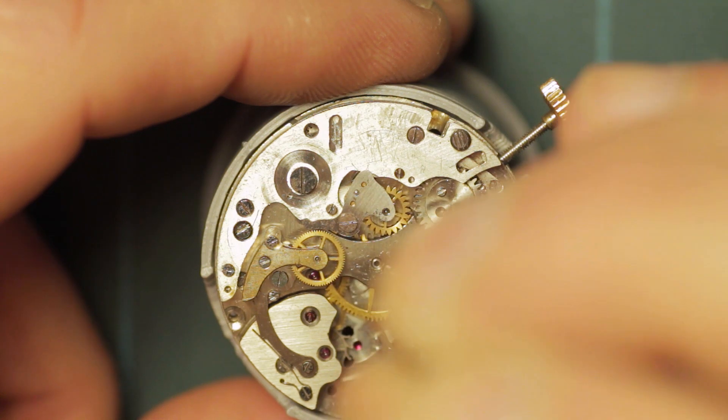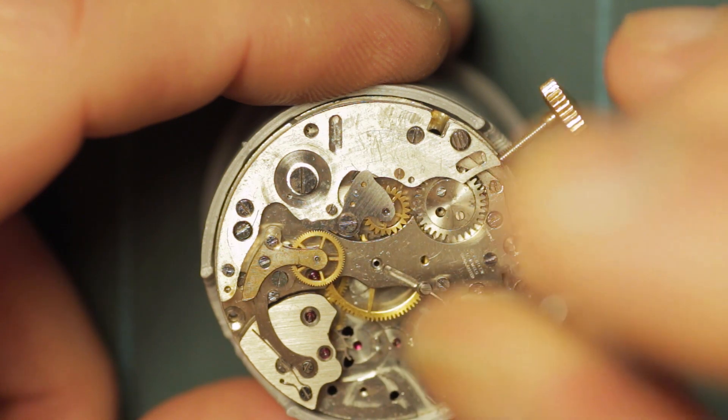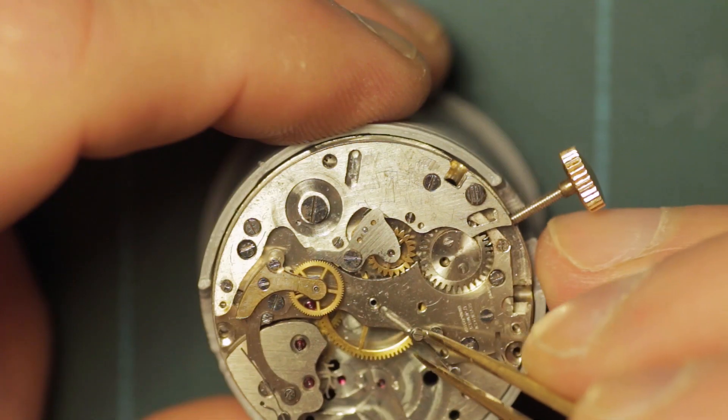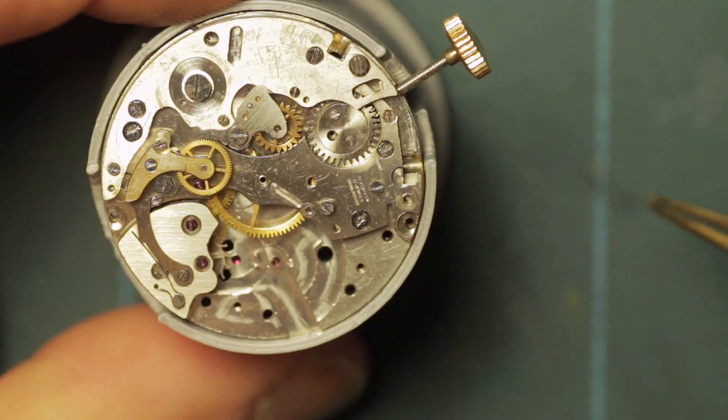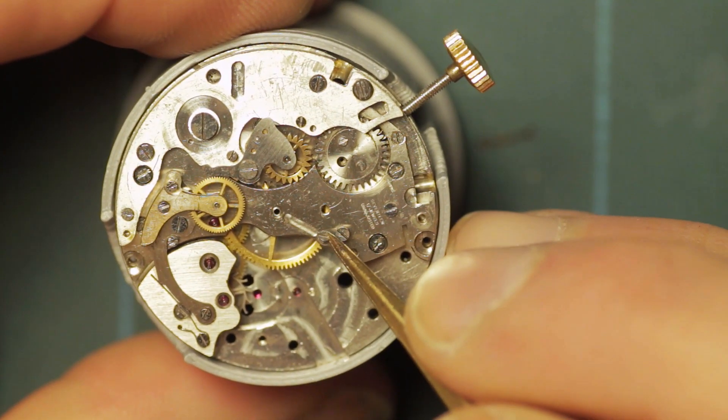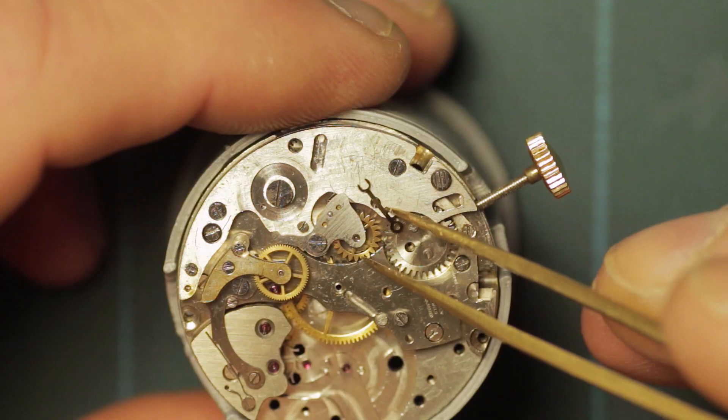And then the chronograph runner spring, which is the small spring that sits underneath the chronograph runner to give it a little bit of upward tension, is removed. These are small and quite fragile, so care must be taken when handling them.